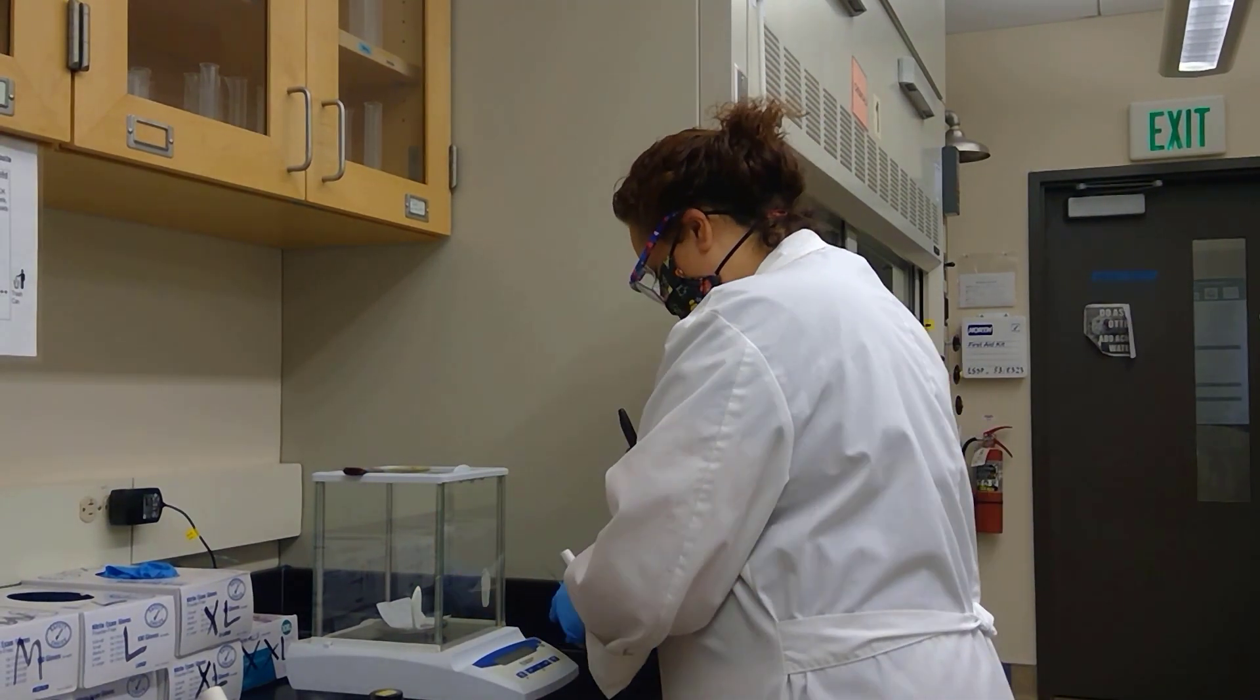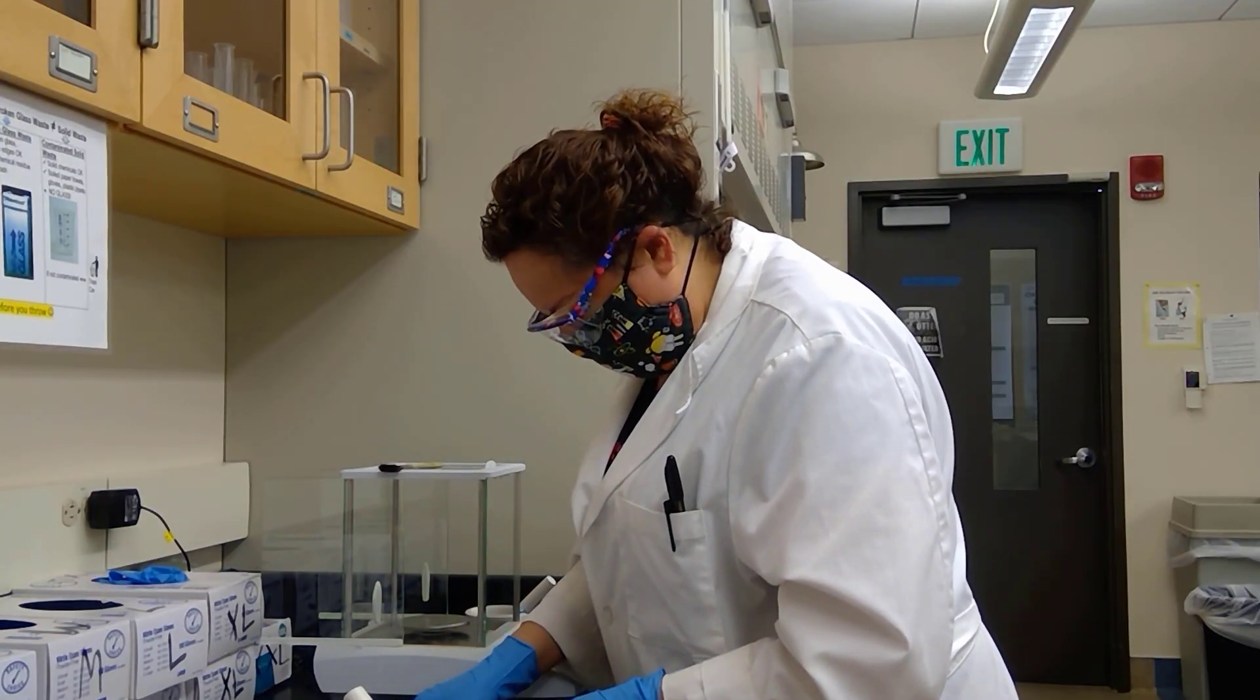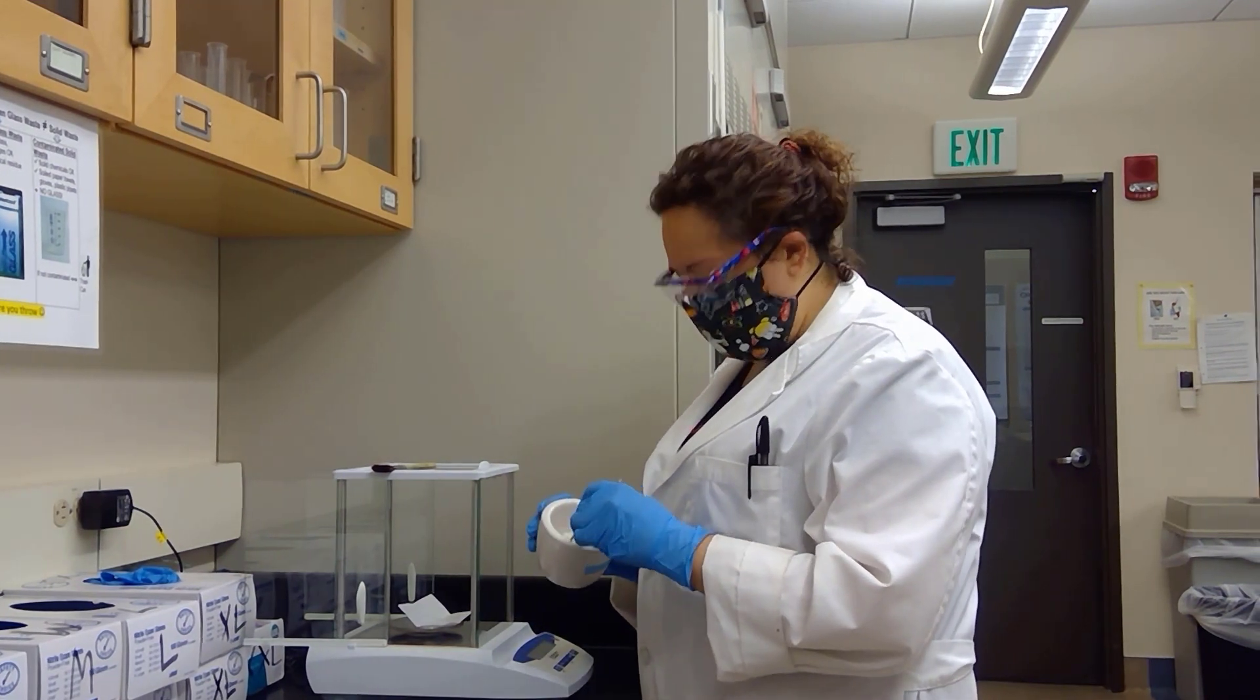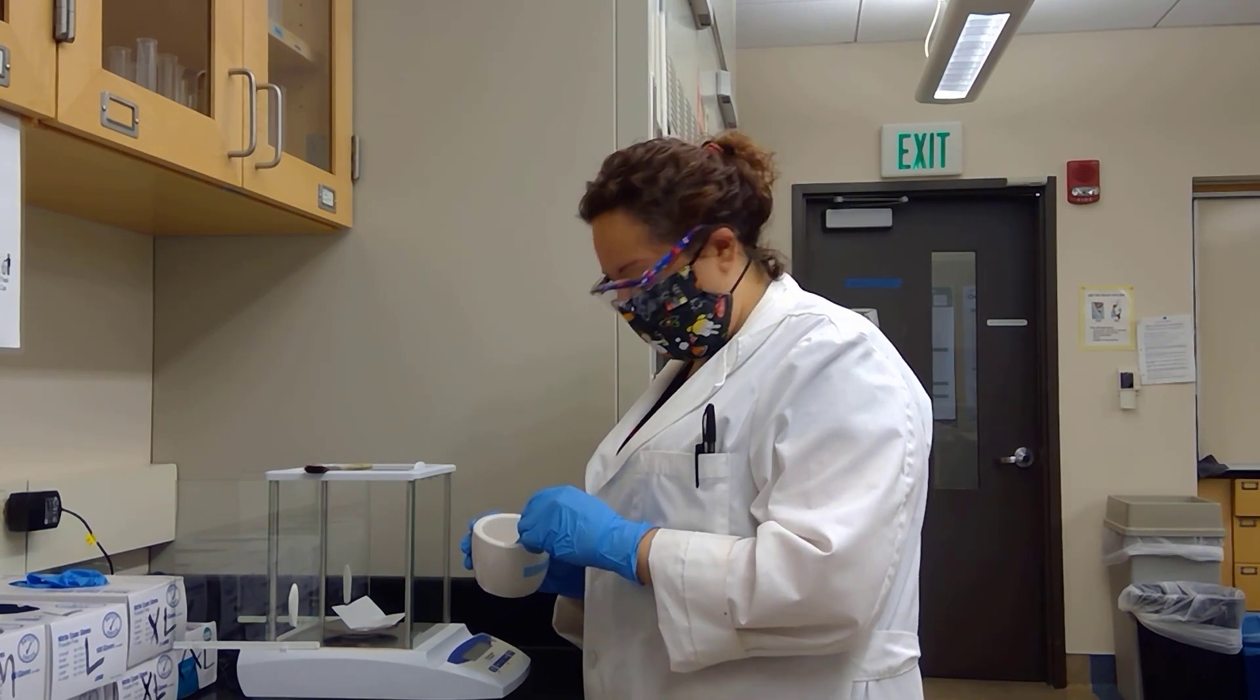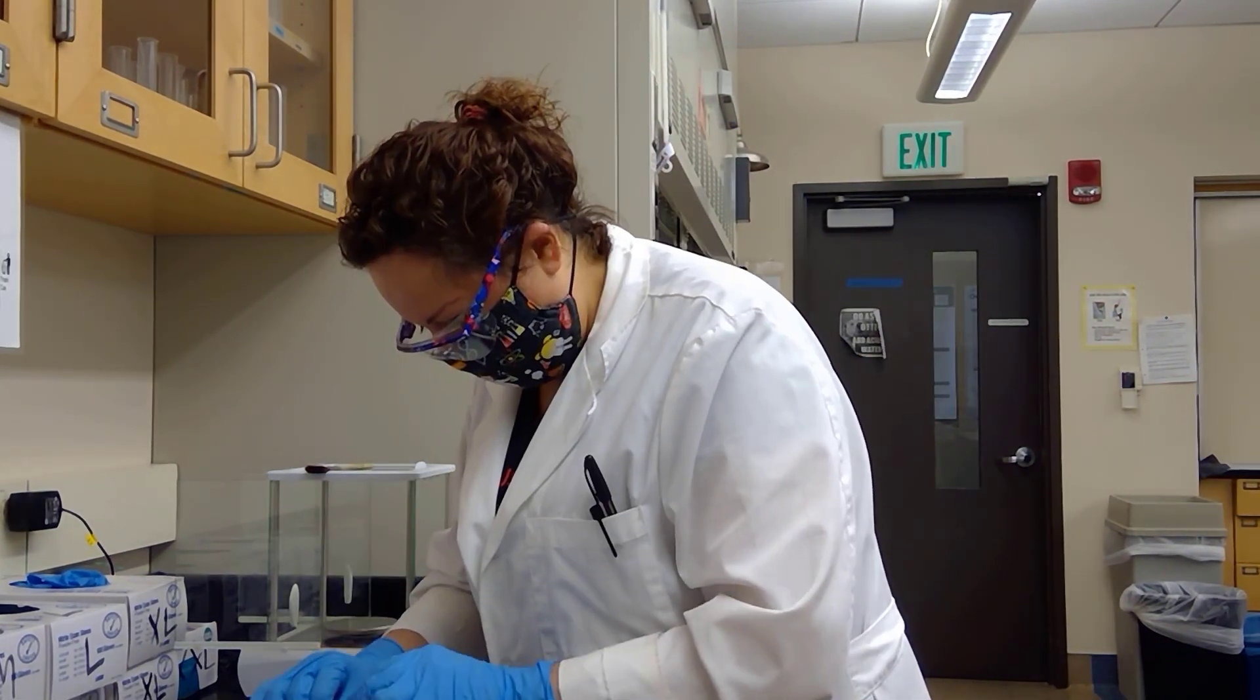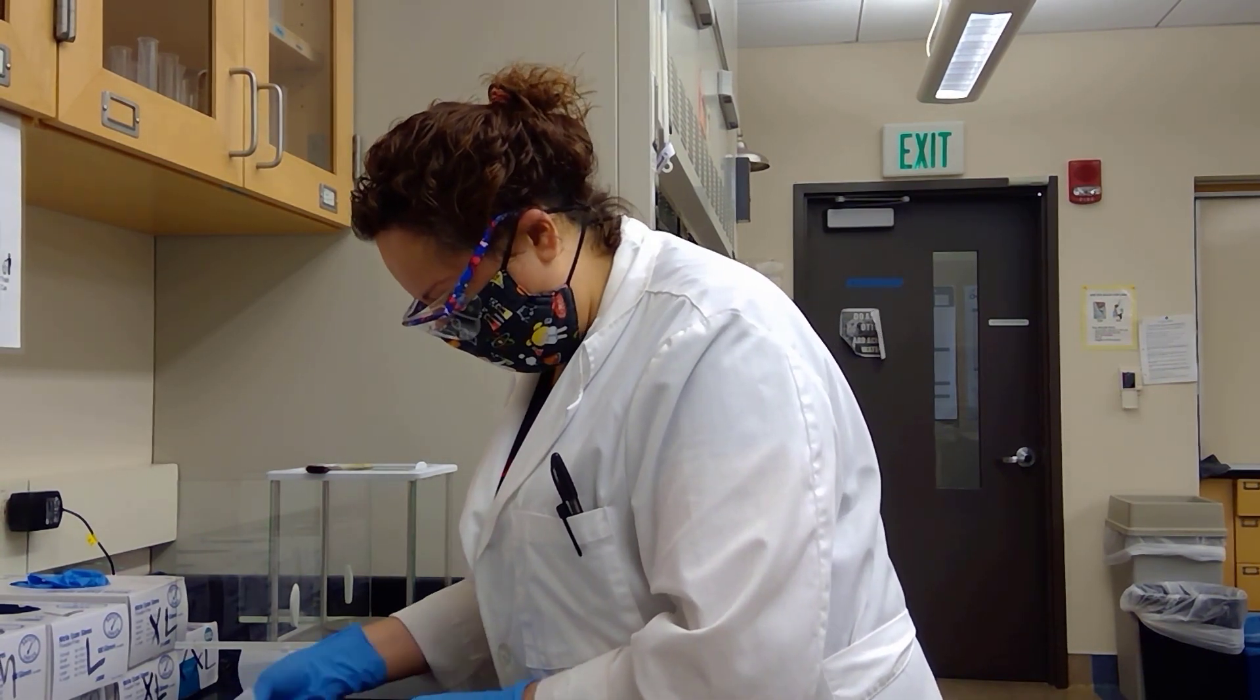Now I'm moving on to my potassium carbonate. Next up we are measuring 0.28 grams of potassium carbonate and we will also add it to our round bottom flask. Now that I have my two solids, I will begin adding my liquids.